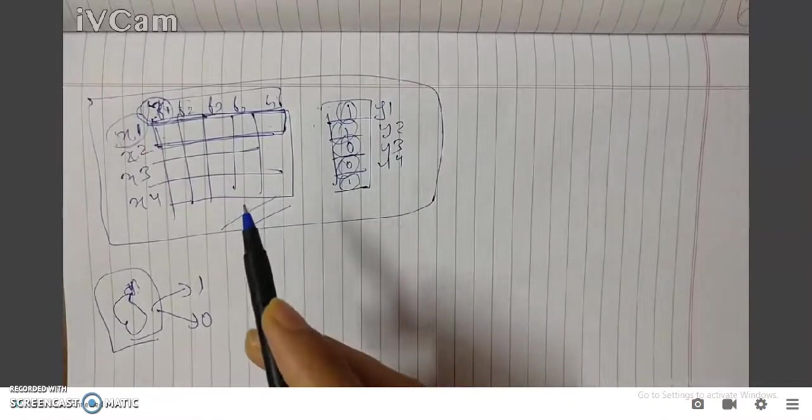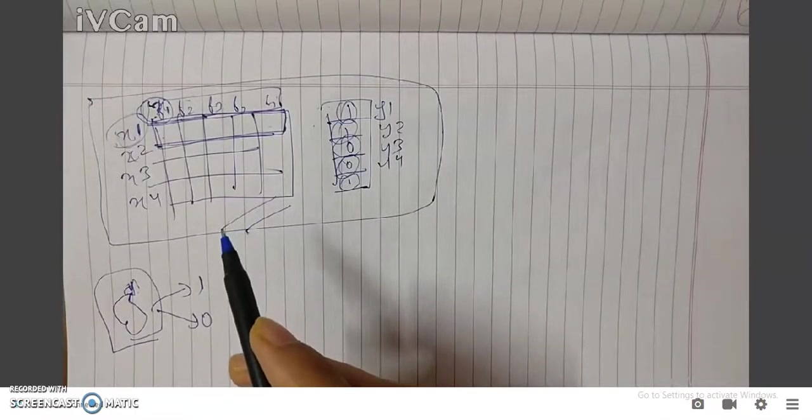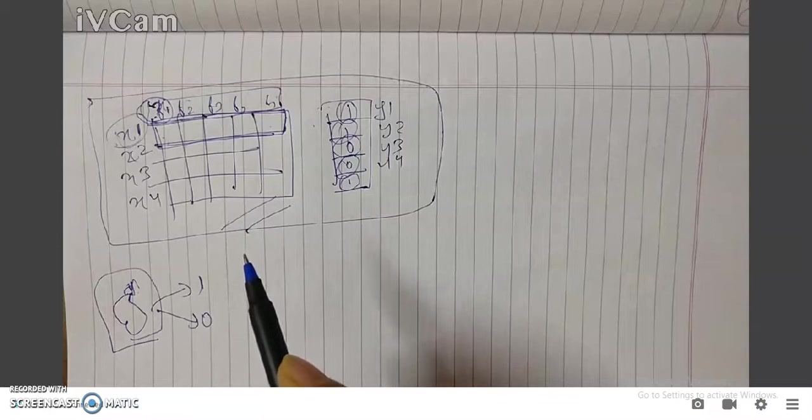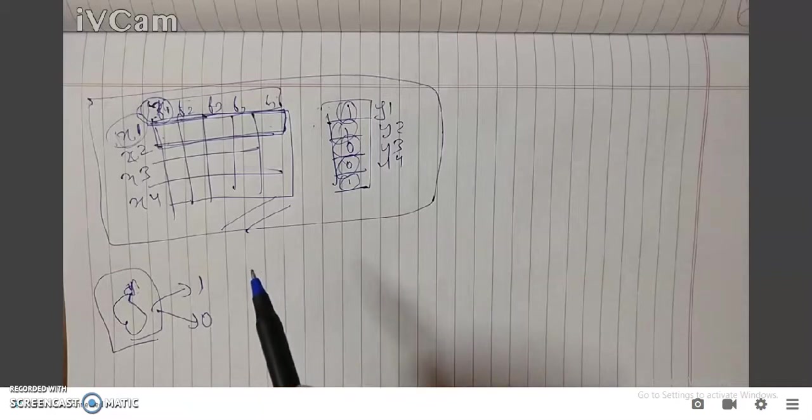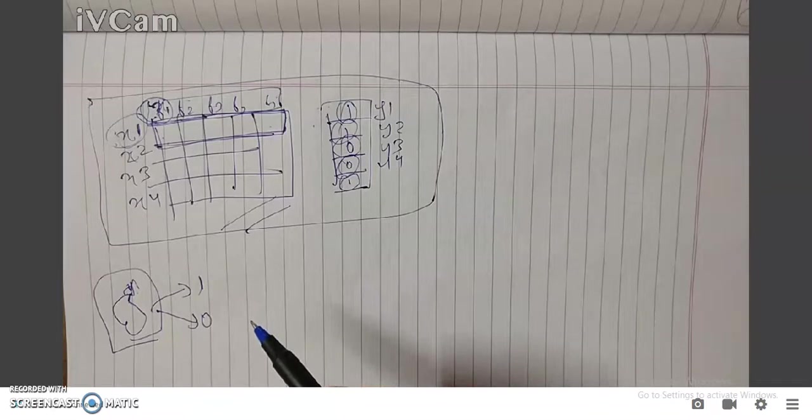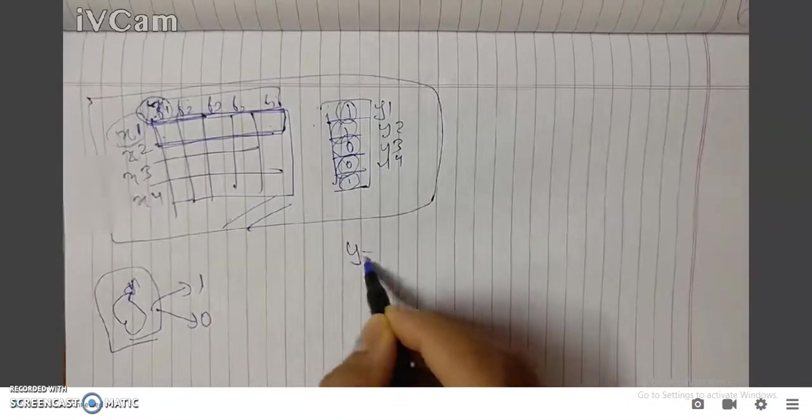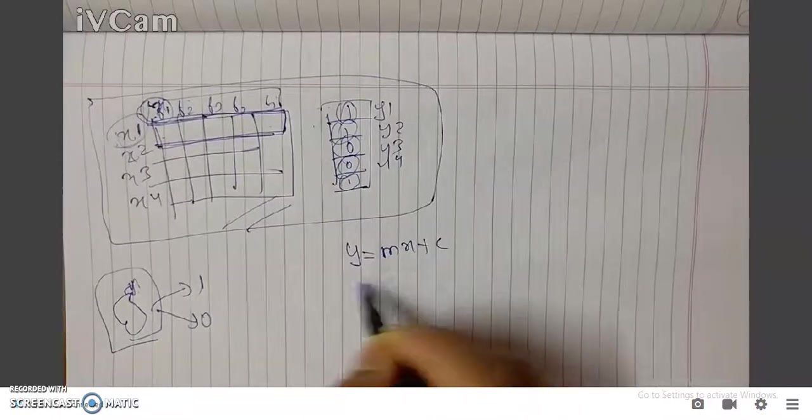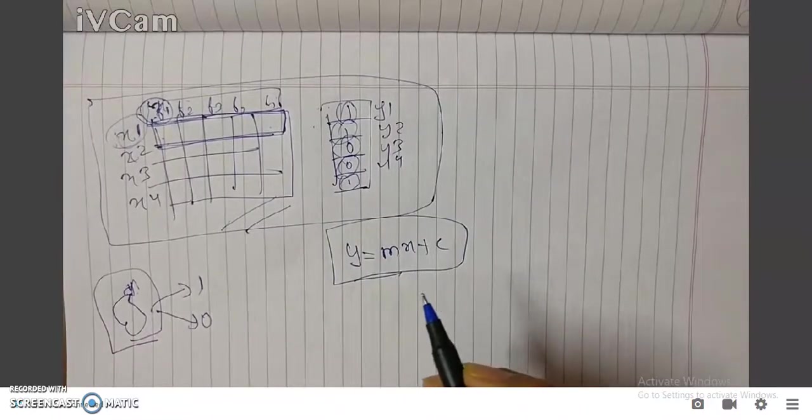Machine learning can be of four types. One is supervised learning. In supervised learning, our main aim is to find a hypothesis that maps the X input to the Y output. What is the hypothesis? Hypothesis is a function to calculate the Y given the X input. Like in linear regression, if you see Y equals MX plus C, this is the hypothesis - it's a mathematical equation.